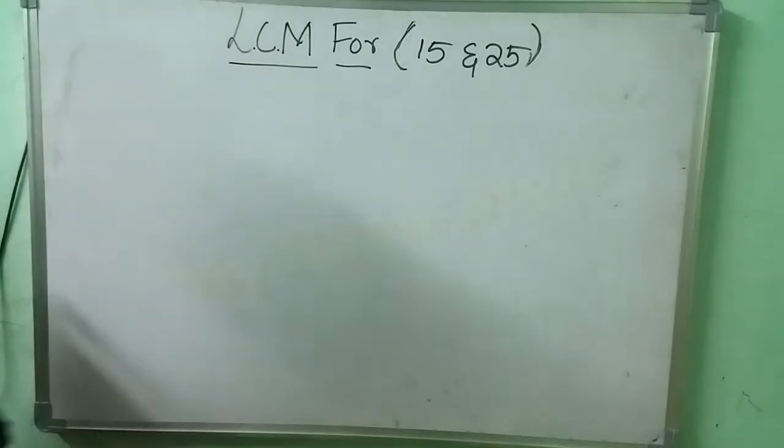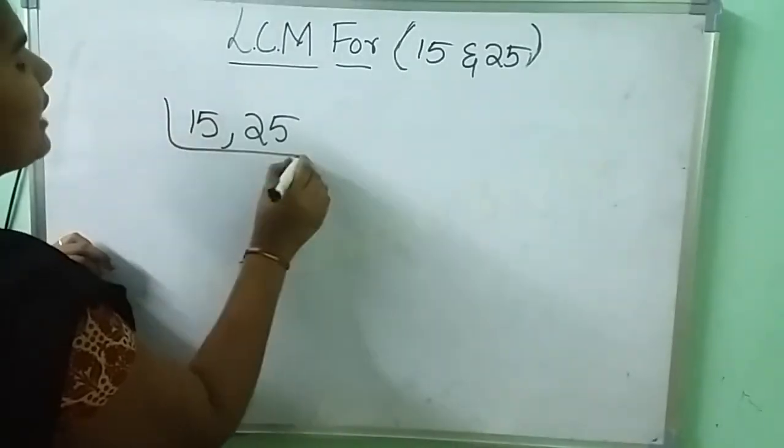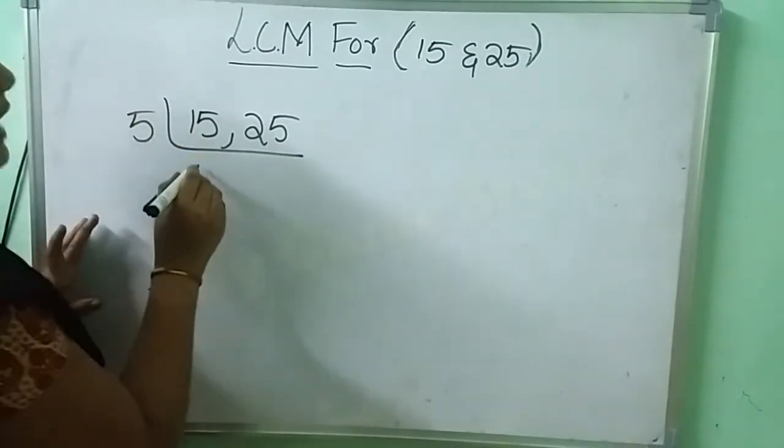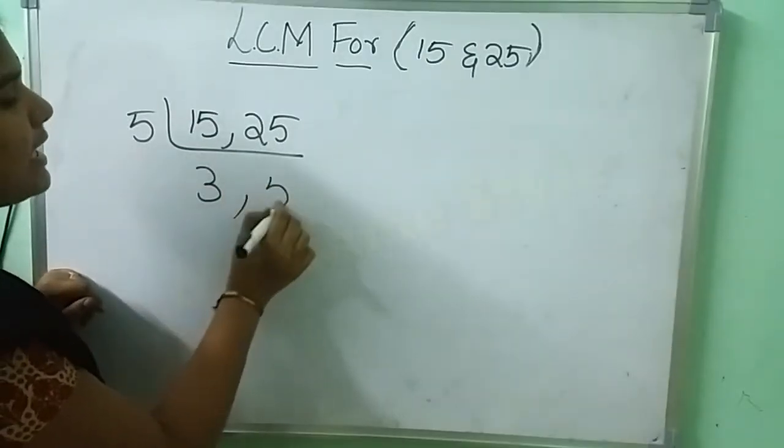Here we are doing the LCM of 15 and 25. So, I am taking 5 table here. 5 times 3 is 15. 5 times 3 is 15, 5 times 5 is 25.